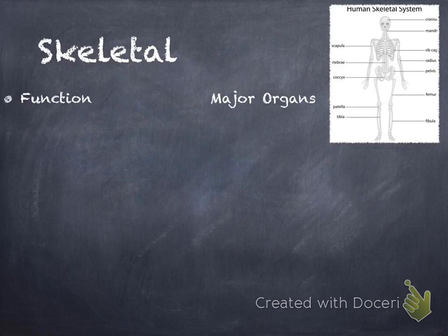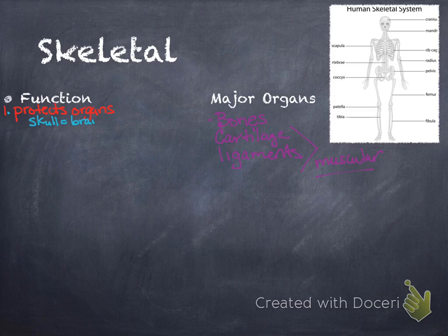All right, skeletal. Your skeletal system—the human skeleton has 206 bones. Okay, so that picture just has some of them and I'm not going to name all 206 bones as your major organs. You just are going to know that your bones are your major organs, also cartilage and ligaments, and we'll talk about those when we get to the muscular system. Function: the skeletal system has four jobs. One is to protect your organs, like your skull protects your brain, your ribs protect your heart and lungs. That's the job of those major organs.